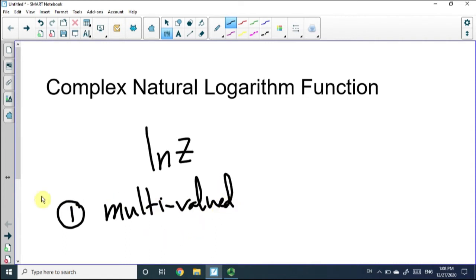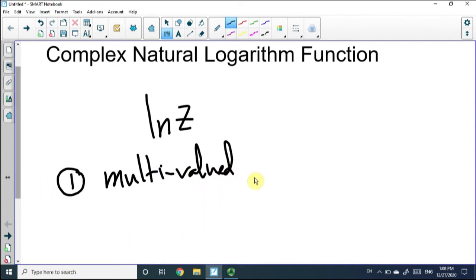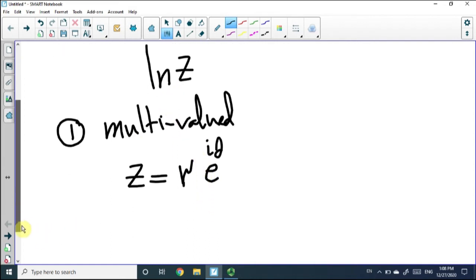What does it mean? Let's write z in a general way using Euler formula. This equals the modulus, let's call it r, e to the i theta. We are familiar with this notation. Let's try to find what is ln z.